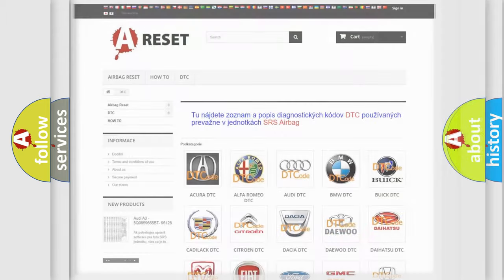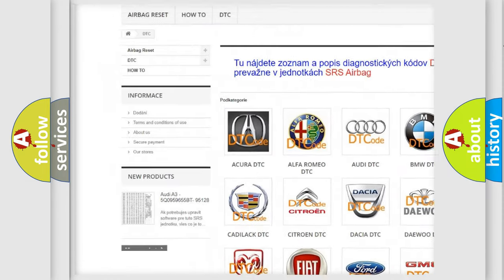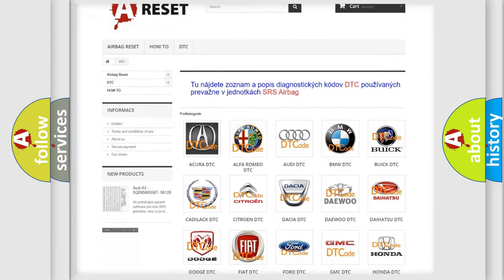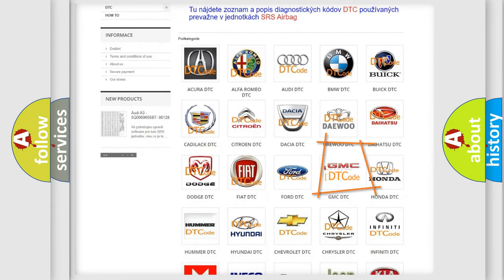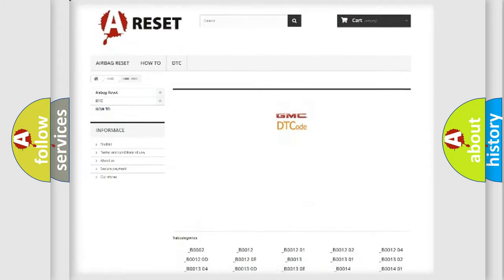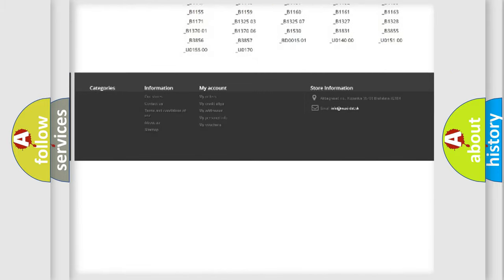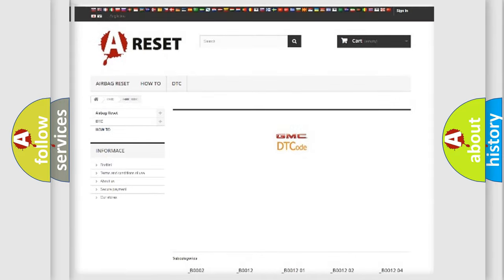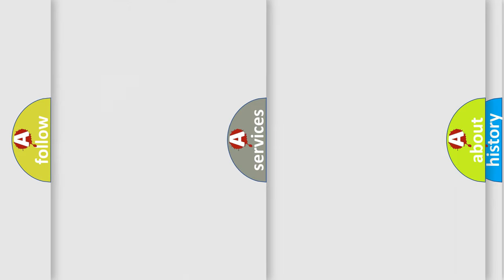Our website airbagreset.sk produces useful videos for you. You do not have to go through the OBD2 protocol anymore to know how to troubleshoot any car breakdown. You will find all the diagnostic codes that can be diagnosed in GMC vehicles and many other useful things.